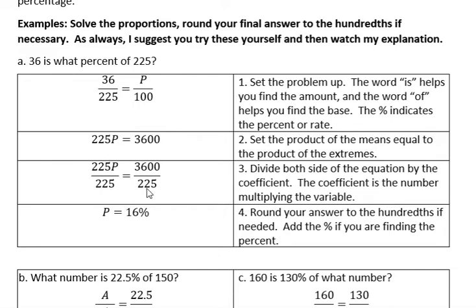The coefficient is the number multiplying the variable. In this problem, 225 is our coefficient, so we divide both sides by 225. 225 divided by itself becomes 1, which makes that just P. And then 3600 divided by 225 is 16. We didn't need to round it; it came out to be exactly 16. And because we're looking for percent, I'm going to go ahead and add that percent symbol.